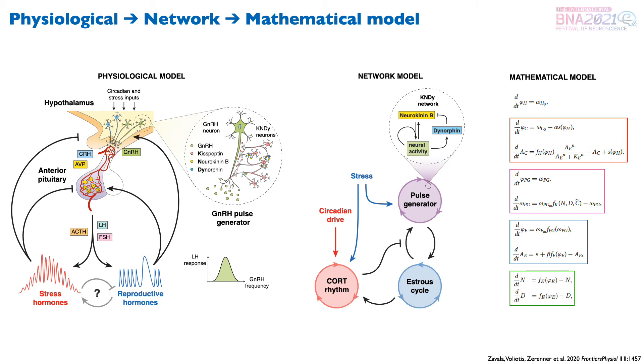This network model was in turn represented mathematically as a set of ordinary differential equations. The details of the mathematical model can be found in the paper, but for now it's enough to clarify that instead of accounting for hormone concentrations, the model is representing the properties of these oscillators, such as their phase, frequency, and amplitude. Then we performed computer simulations of the model to calibrate its parameters and make predictions about in vivo experiments and physiopathological scenarios.